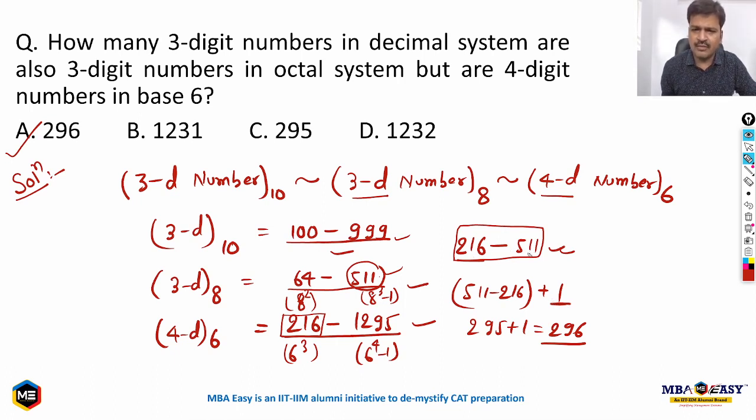Now remember, just notice that we've added 1 here. Why do we add 1? Because when you subtract 216 from 511, you are not counting 216. For example, if somebody asks how many numbers are there between 3 and 6, if you do 6 minus 3 you'll get 3, but there are four numbers.